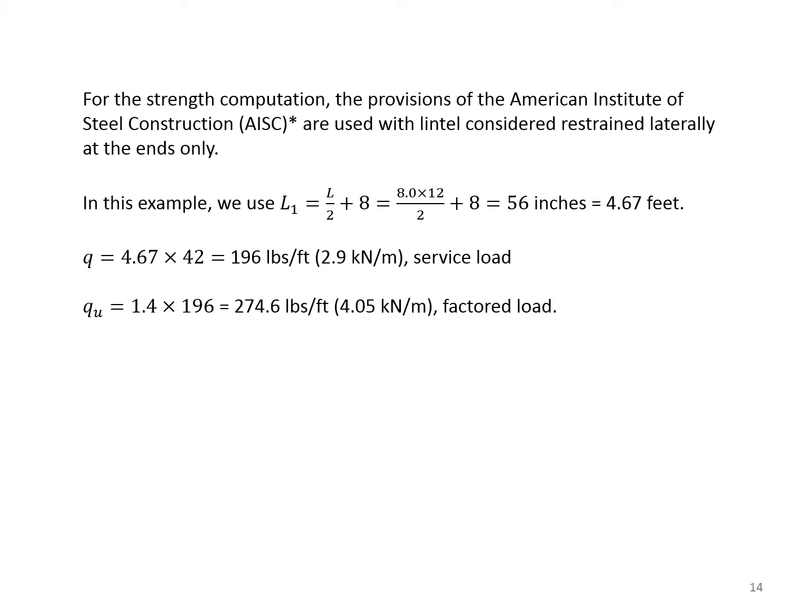For the strength computation, the provisions of the American Institute of Steel Construction, AISC, are used with the lintel considered restrained laterally at the ends only. In this example, we use L1, which is the height of the triangle, as L/2 plus 8 inches, which would be 56 inches, or 4.67 feet. Therefore, at the peak, the intensity of the load would be 4.67 times 42. Remember, 42 is the density of the wall. The answer is 196 pounds per foot. And remember that this is a service load, without any load factor. Because we are using the LRFD approach, we need to multiply this Q by a load factor. The only load we have here is a dead load. Therefore, the load factor is 1.4. The answer is QU = 1.4 × 196, which is 274.6. This is called the factored load.